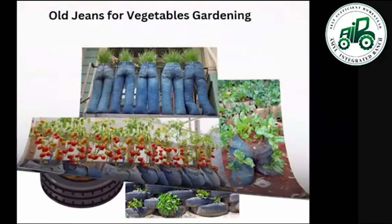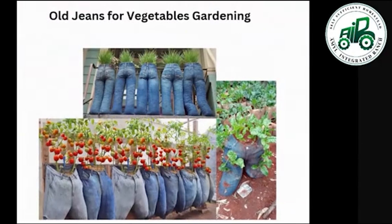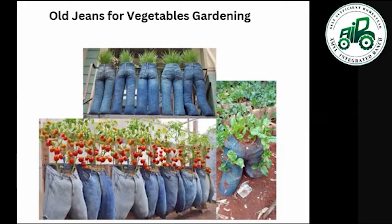Old jeans can also be used in urban gardening as a medium for planting, provided you fill them with a good source of soil media. As illustrated, old jeans can be planted with tomato, onion, and radish.